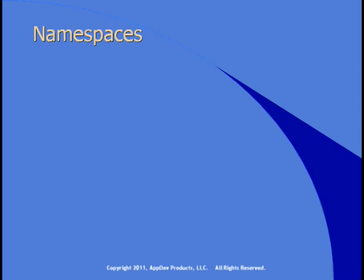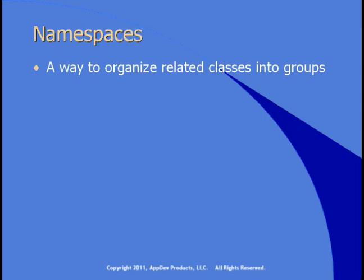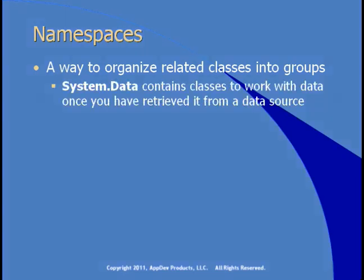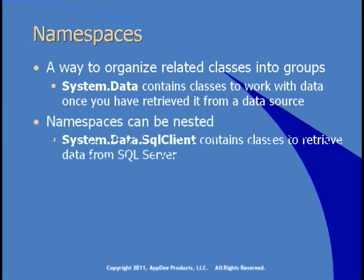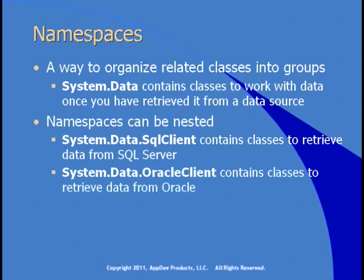Another way to organize classes is into namespaces. A namespace is a way to organize related classes into groups. The .NET framework organizes all of its classes into namespaces. For example, System.Data contains classes you use to work with data after you've retrieved it from a data source. Classes that do the actual retrieving are specific to the type of data — for example, SQL Server or Oracle — so those classes are nested inside the System.Data namespace. System.Data.SqlClient contains classes to retrieve data from SQL Server, and System.Data.OracleClient contains similar classes for Oracle databases.